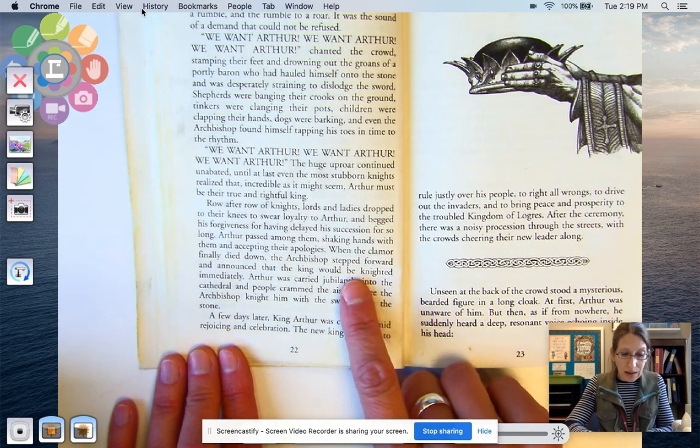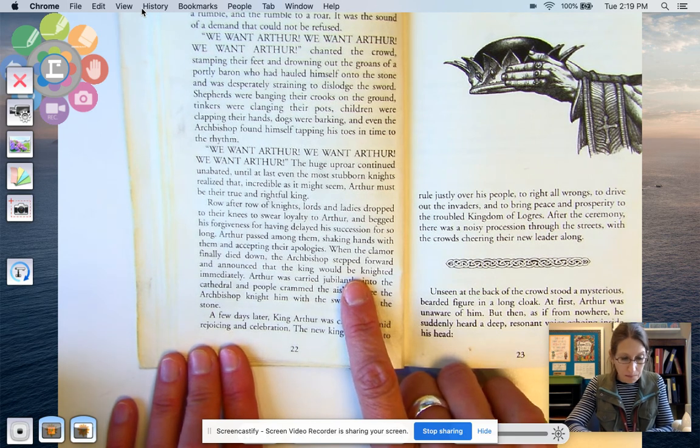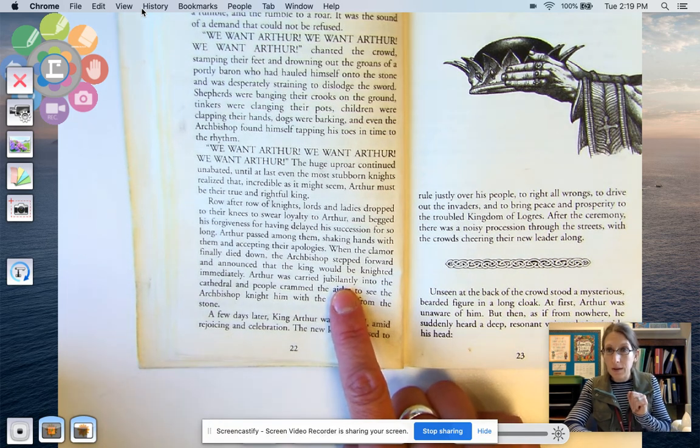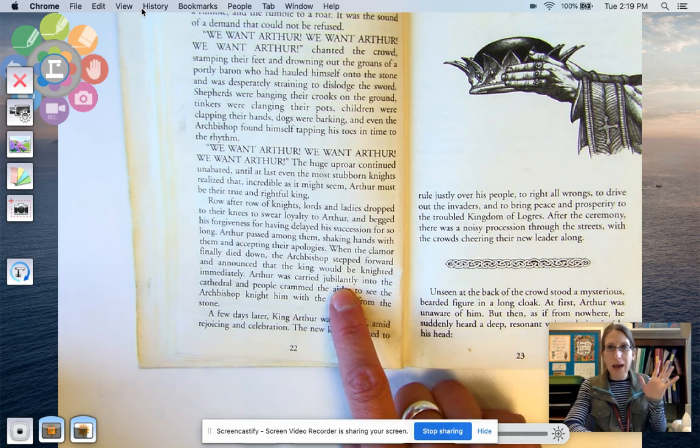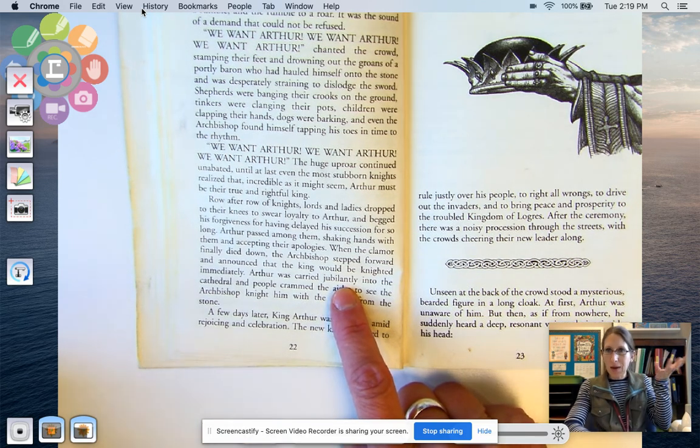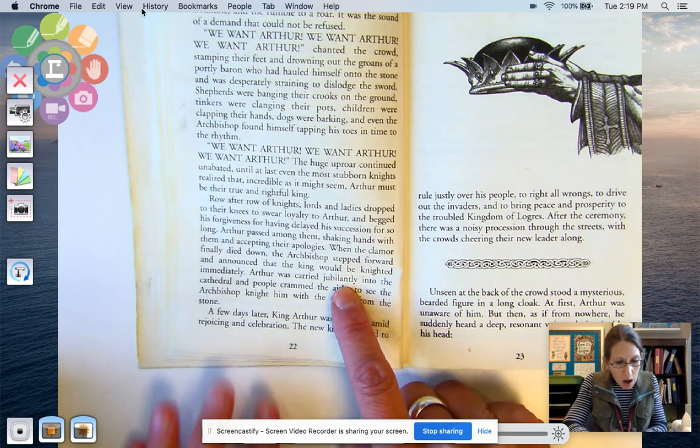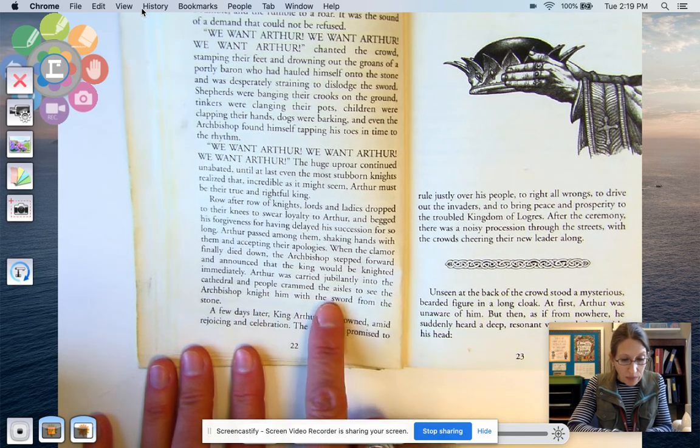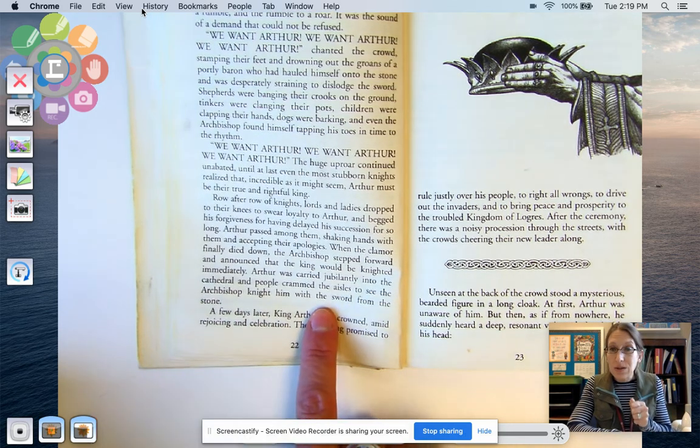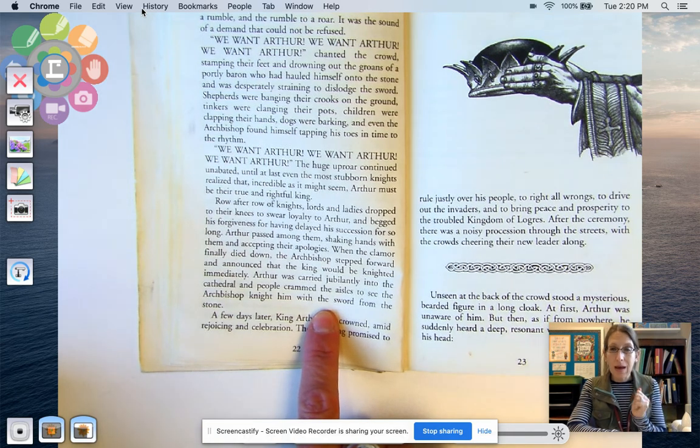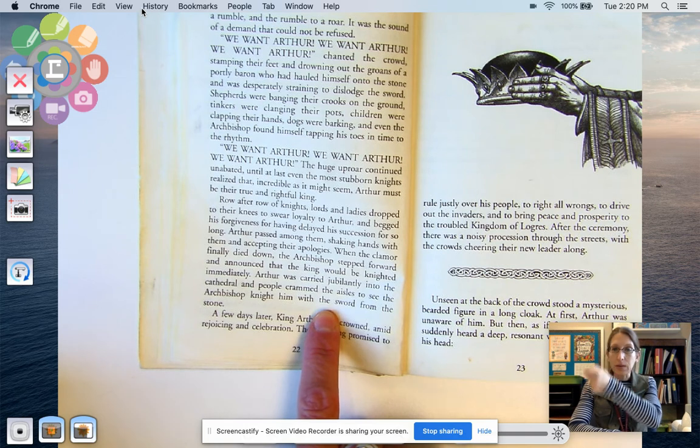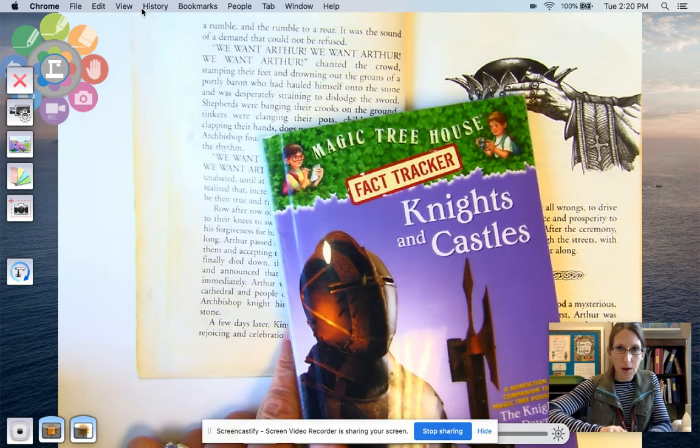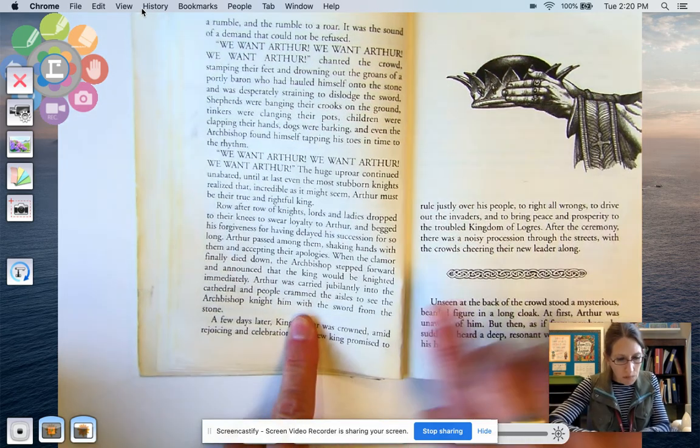Arthur was carried jubilantly into the cathedral. Jubilantly. Yeah, joyfully, merrily, happily. Can you picture them carrying him into the cathedral? Arthur was carried jubilantly into the cathedral, and people crammed the aisles to see the archbishop knight him with the sword from the stone. So he used the same sword that Arthur had pulled out to knight him. And that's where someone will kind of kneel down, and then they'll be tapped on each shoulder to be knighted. Oh, remember that from our book about knights and castles.